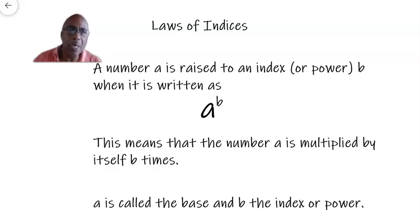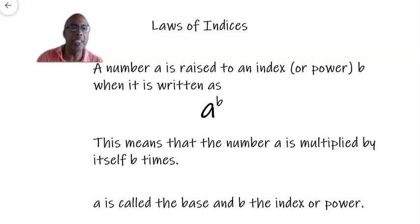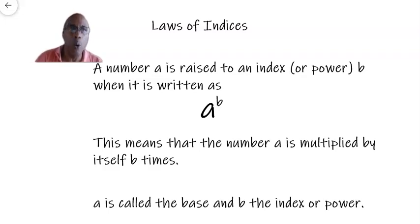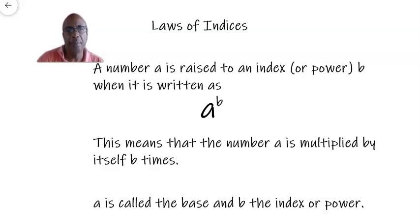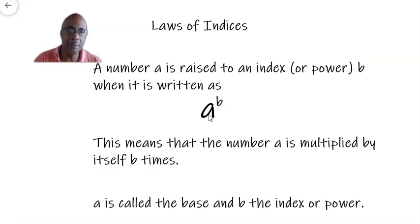First, let's try to understand what we mean by an index in mathematics. Anytime you raise any number — let's say you have a number represented by the symbol a — and it is raised to an index or power b, then you write it as a to the power of b. B is the index or power, and a is called the base. All that means is that you are multiplying the base a by itself b times.